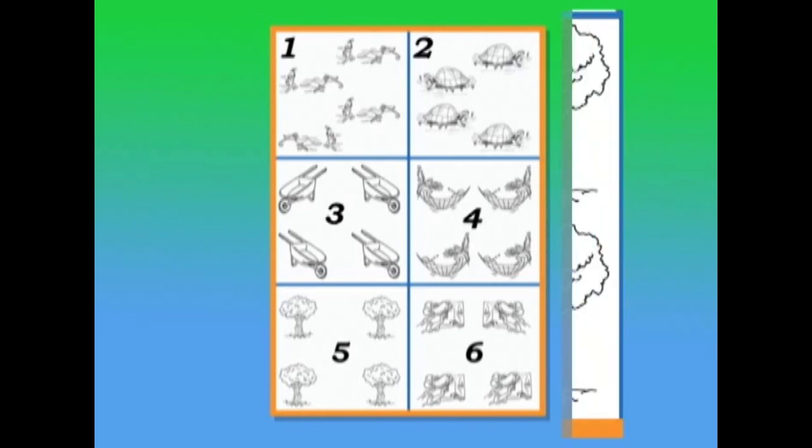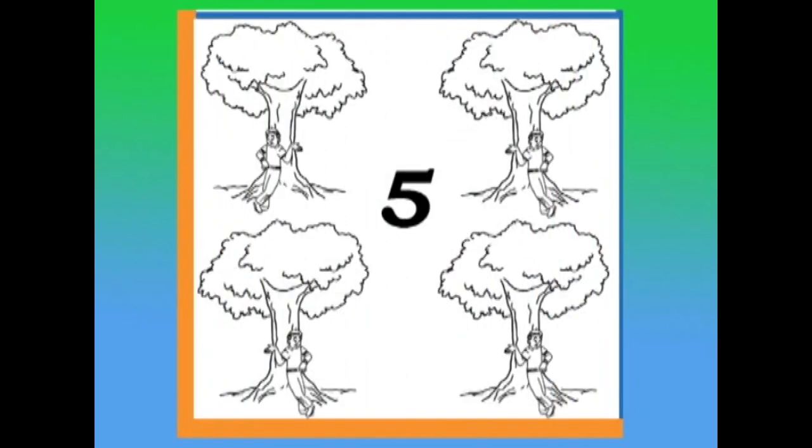Now, let's look at box number 5. How many trees can you see? How many boys can you see? Is the boy standing or sitting? Is he standing upright or is he leaning against the tree?